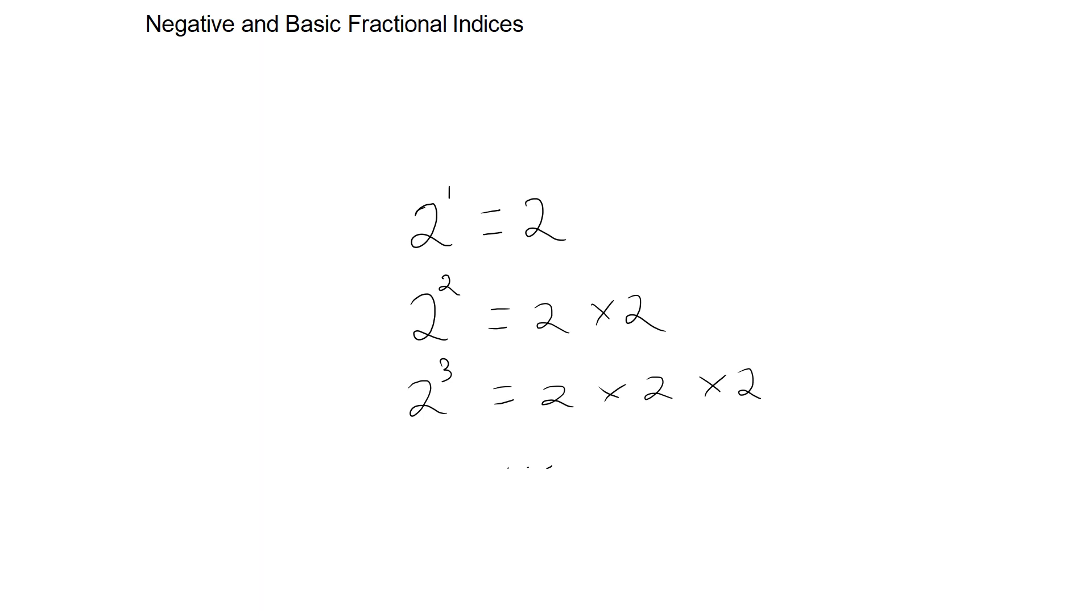So to go down one rung of the ladder, we multiply by 2. Therefore, to go up one rung of the ladder, we do the inverse of times by 2, which is dividing by 2.